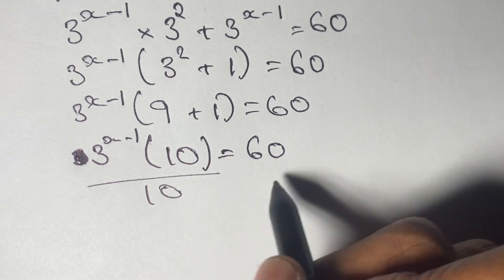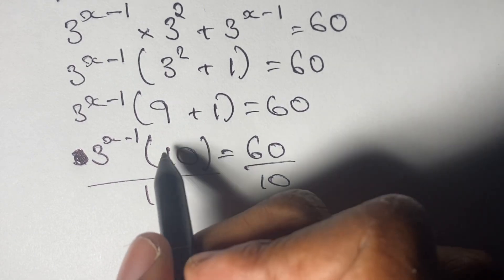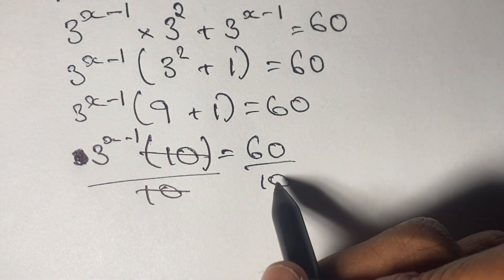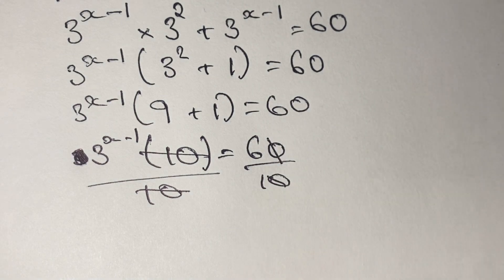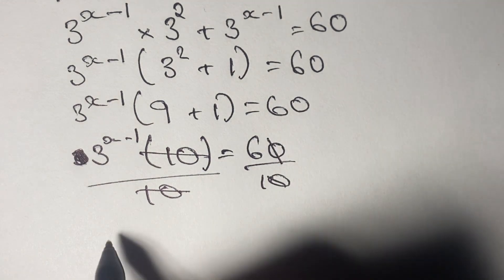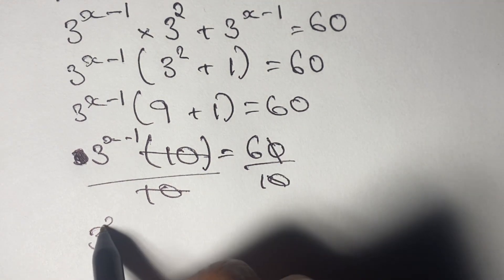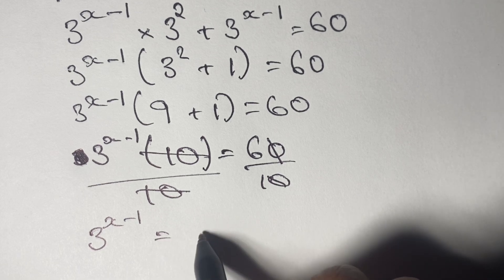From here, we solve x by dividing both sides by 10. We cancel out 10 on the left, and on the right, 60 divided by 10 gives us 6. So we have 3 to the power of x minus 1 is equal to 6.